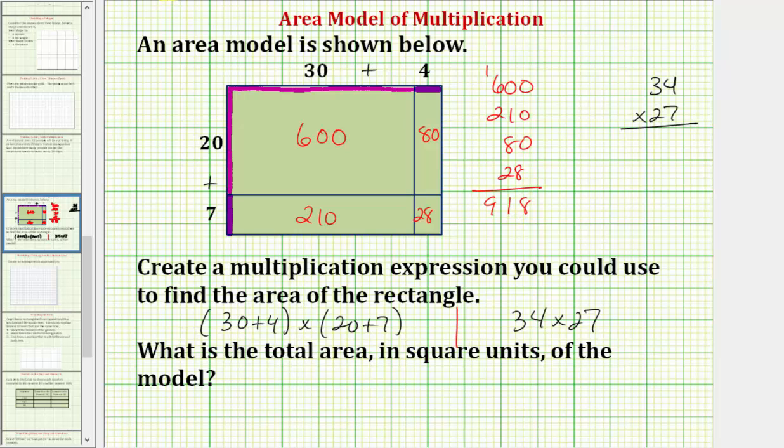Let's also check it though by determining this product. So seven times four is equal to 28. The two goes in the tens place value. Seven times three is 21, plus two is 23. And now we multiply by the two. But because the two is in the tens place value, we're really multiplying by 20. So we'll put a zero in the ones place value. And then we have two times four, that's eight.